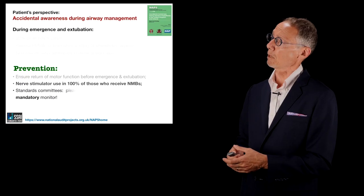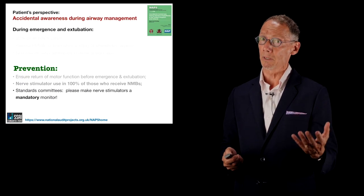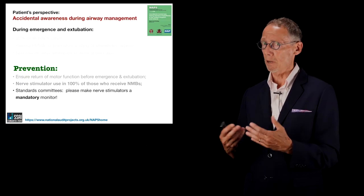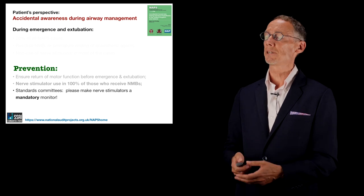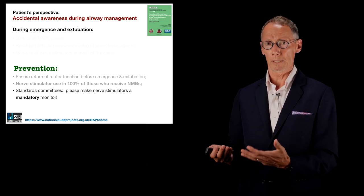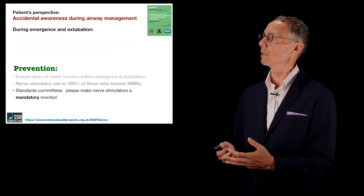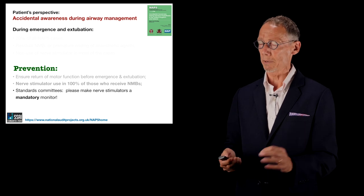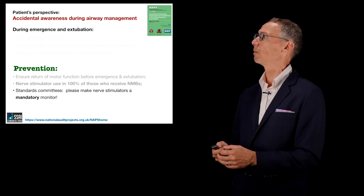Prevention requires ensuring full return of motor function before emergence and extubation — that means a train-of-four ratio of 90% or greater. It is most important to use a nerve stimulator in 100% of patients who receive neuromuscular blockers. Unfortunately, in Canada it is not ubiquitous. I consider it pure laziness not to use one, and my plea to those on standards committees is to make nerve stimulator use a mandatory standard.